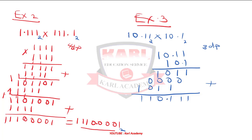How many decimal points do we have? Place your decimal point and leave the answer. So the answer is 110.110 — that is the answer with three decimal places placed correctly. I think these examples are enough.